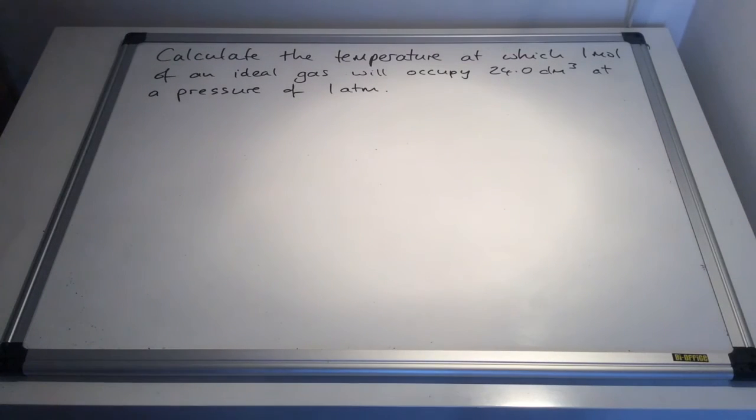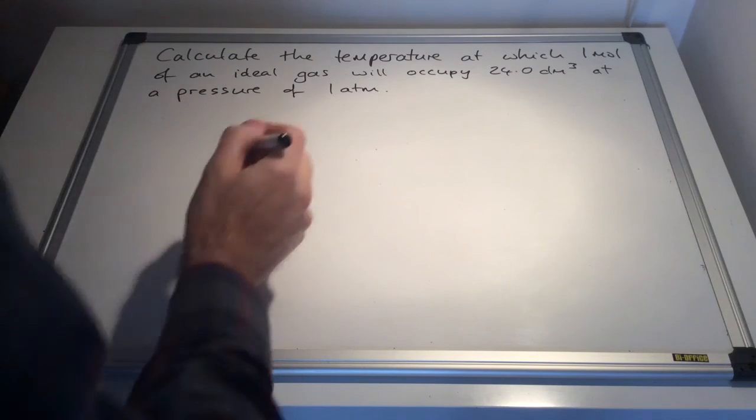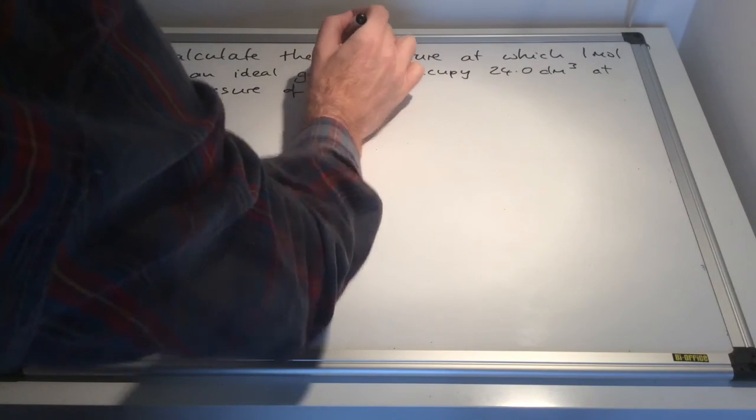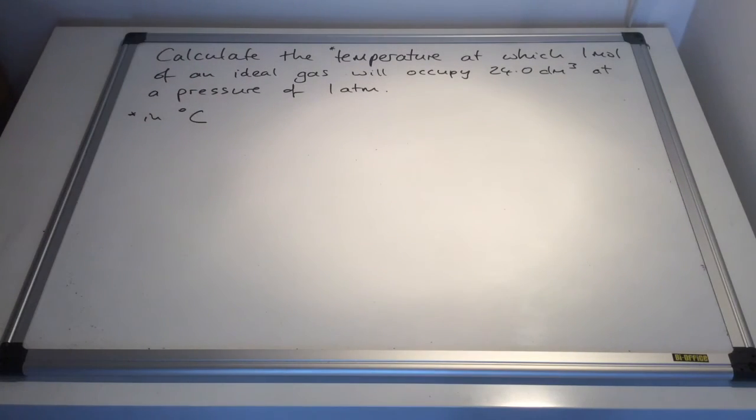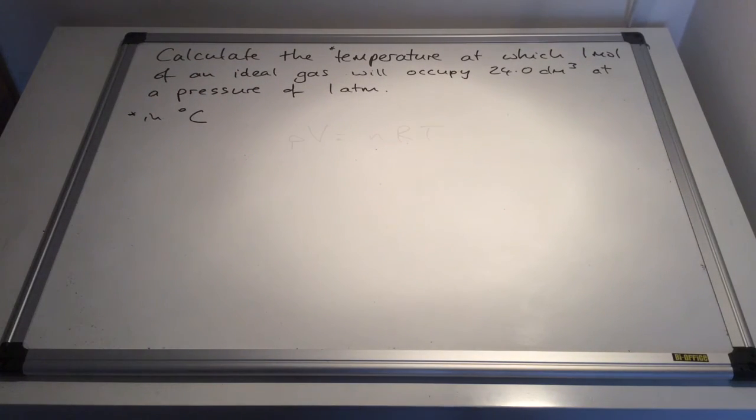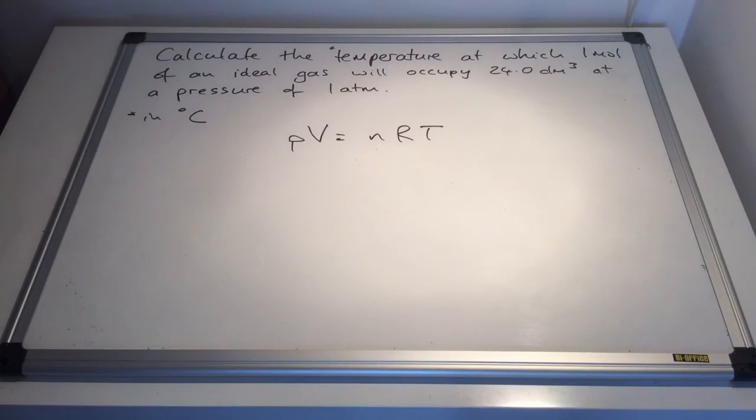So we'll start with this question where we need to calculate the temperature at which one mole of an ideal gas will occupy 24 cubic decimetres at a pressure of one atmosphere. And I'll just stipulate that the temperature is going to be quoted in degrees C, so we're going to get an extra conversion in there.